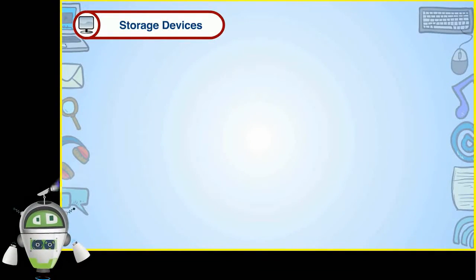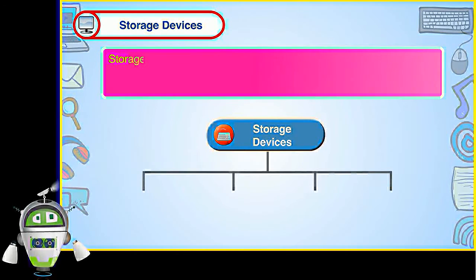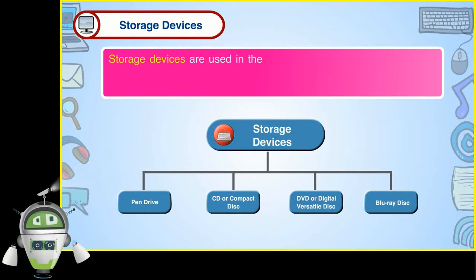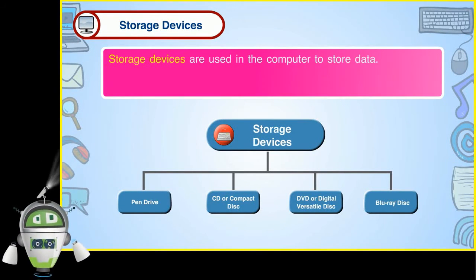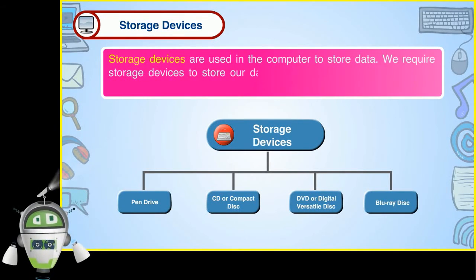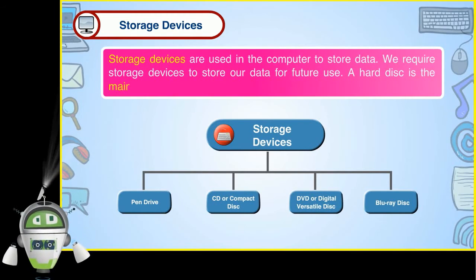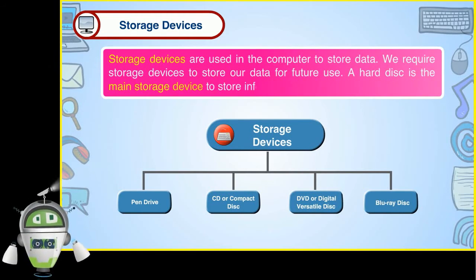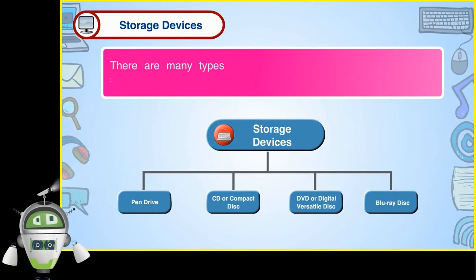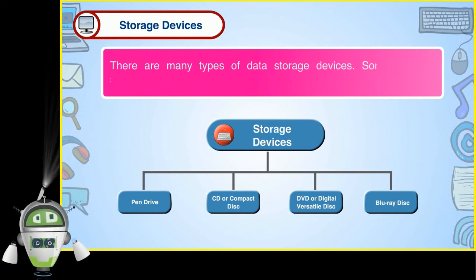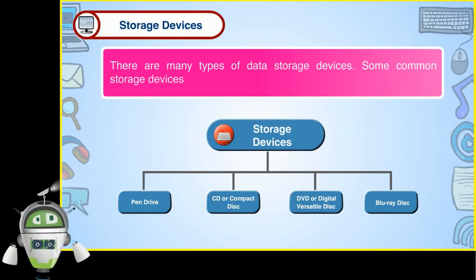Storage devices: Storage devices are used in the computer to store data. We require storage devices to store our data for future use. A hard disk is the main storage device to store information in a computer. There are many types of data storage devices. Some common storage devices are as follows: Pen drive, CD or compact disc, DVD or digital versatile disc, Blu-ray disc.